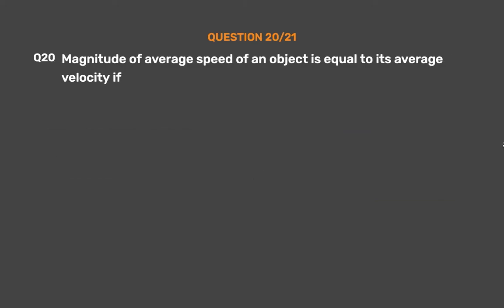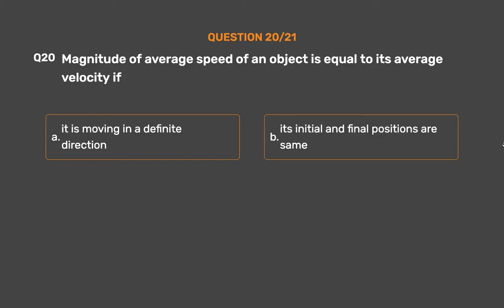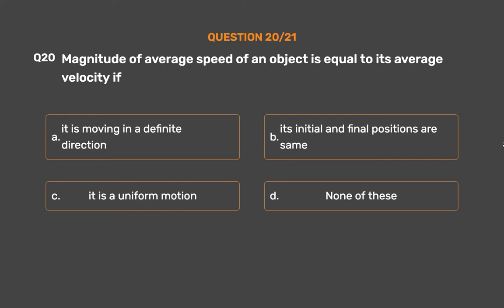Question No. 20. Magnitude of average speed of an object is equal to its average velocity if: Option A: It is moving in a definite direction. Option B: Its initial and final positions are same. Option C: It is a uniform motion. Option D: None of these.